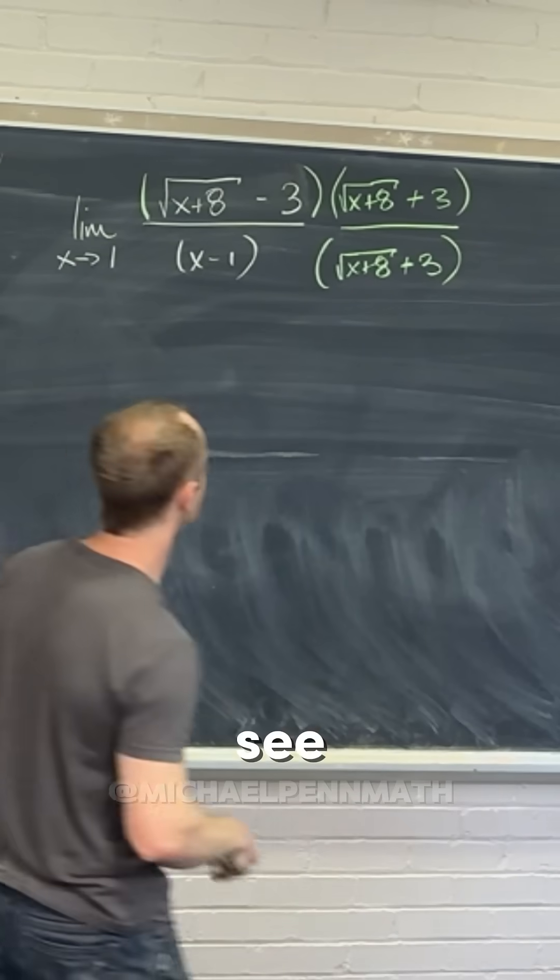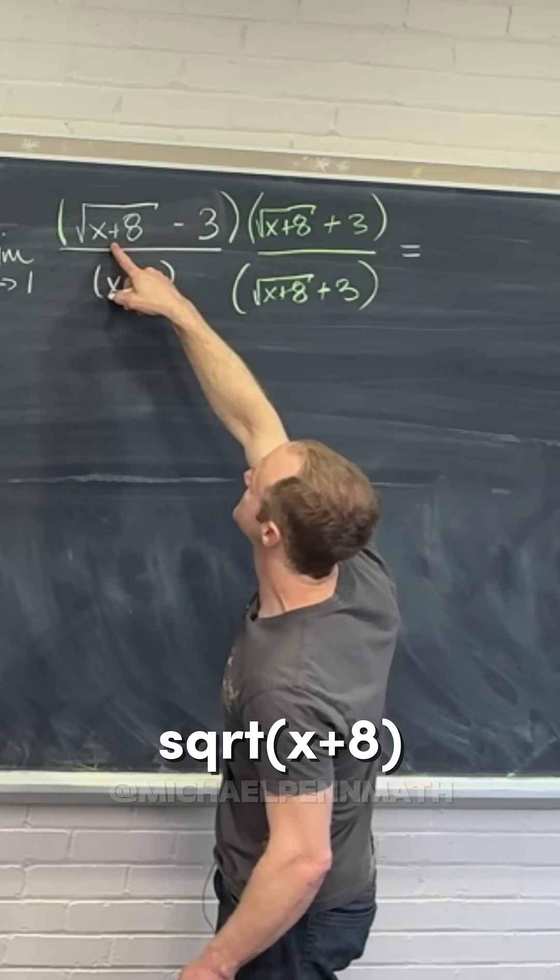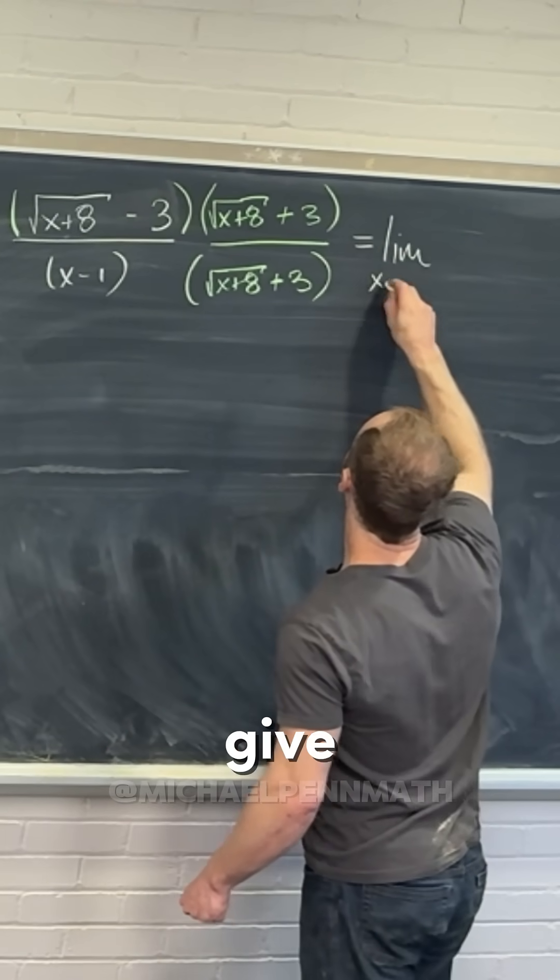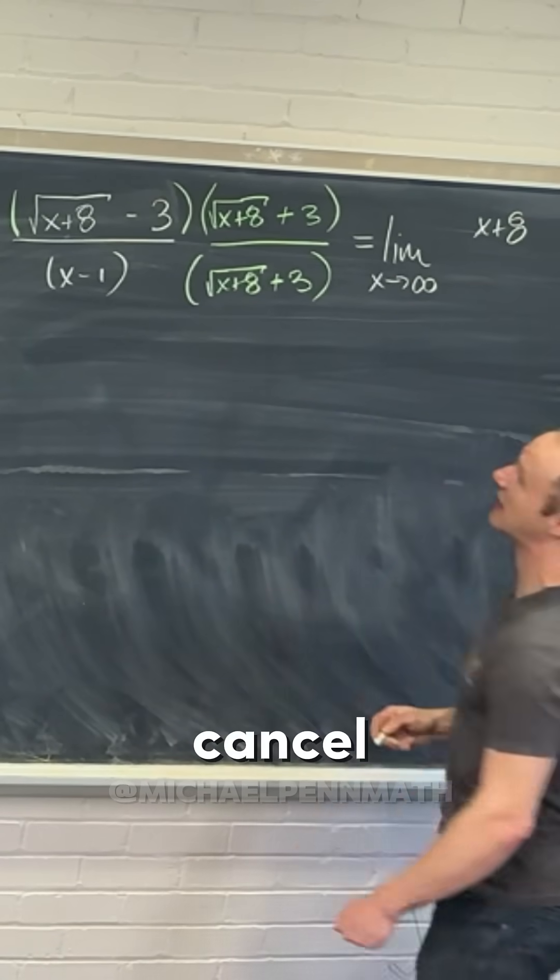In the numerator, we're going to get the square root of x plus 8 times the square root of x plus 8, which simply gives us x plus 8. The squares cancel.